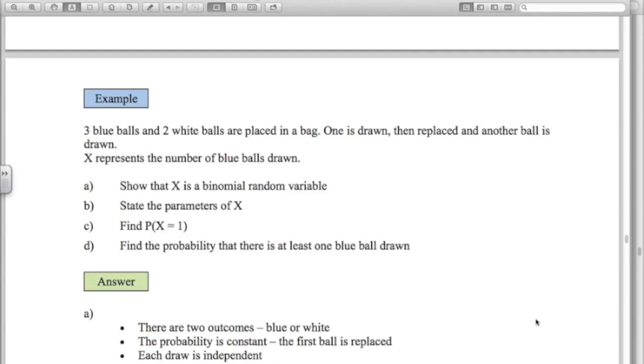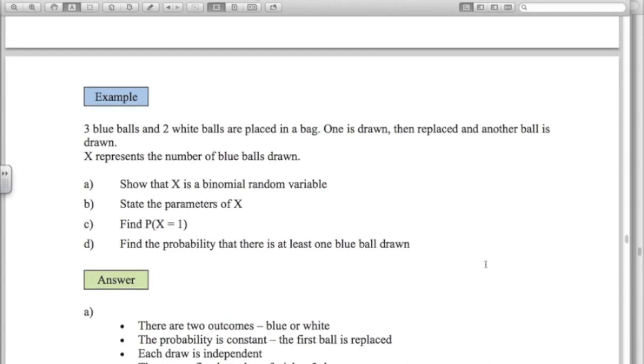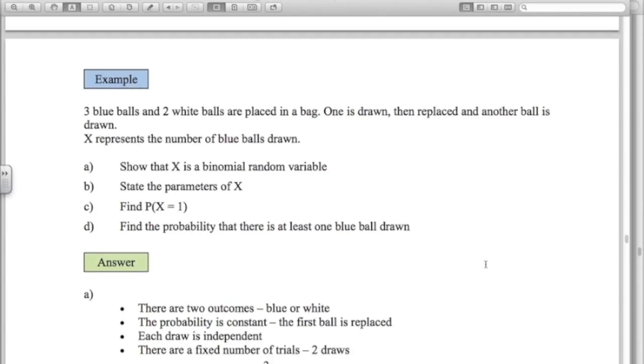So first example here, we've got three blue balls and two white balls in a bag. One is drawn, then replaced, and another ball is drawn. That's important there that we realize that it is replaced. We'd run into problems if it wasn't. Okay, so is X a binomial random variable? Well, there's two outcomes, blue or white.